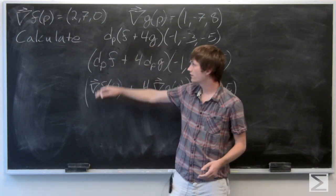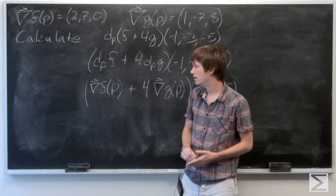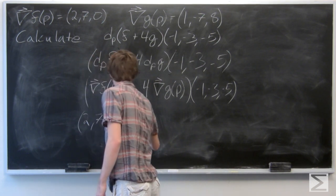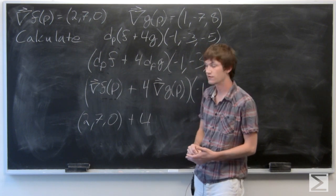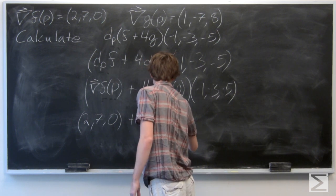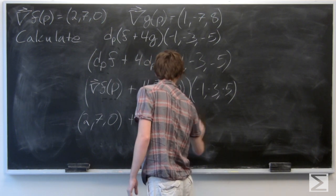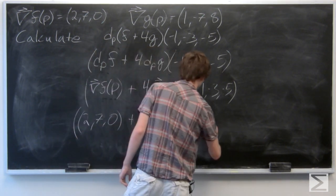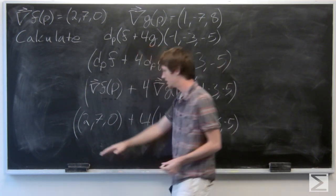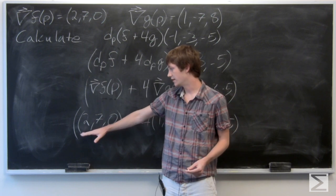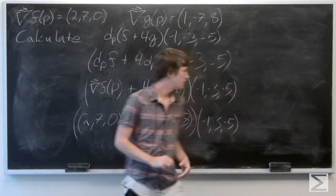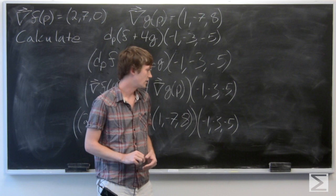We know from our given information that the gradient vector of f at p is equal to 2, 7, 0. And we know that the gradient vector of g at p is equal to the vector 1, negative 7, 8. So we see that our total derivative is the vector 2, 7, 0 plus 4 times the vector 1, negative 7, 8, all dotted with the vector negative 1, negative 3, negative 5.